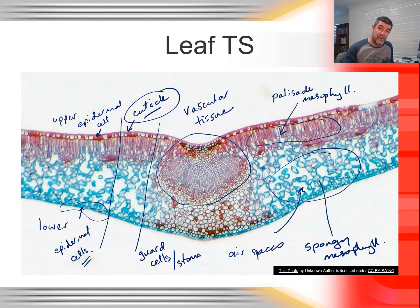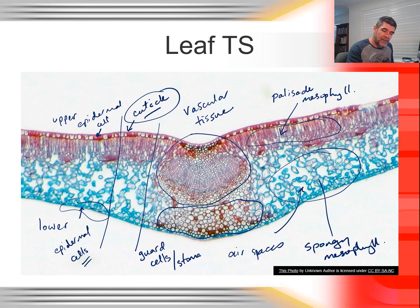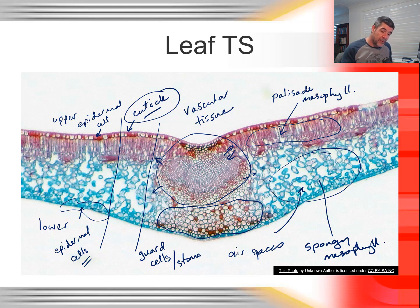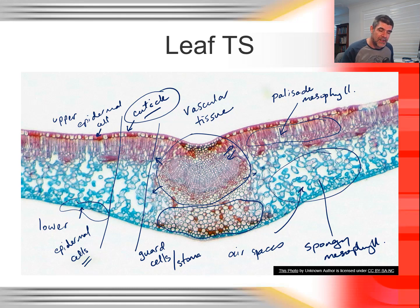Our vascular bundles are going to be reinforced with tissue like sclerenchyma cells, which help protect and strengthen those vascular bundles. The xylem and phloem within the vascular bundles are going to be very close to the photosynthesizing cells because exchange needs to occur in both directions — water being brought up from the roots via xylem and phloem continuous from roots through the stem into the leaves, and sugars and glucose moving back down the plant towards the roots. So this is a nice little overview of leaf structure.